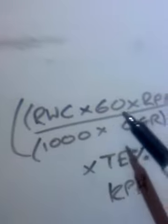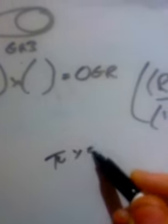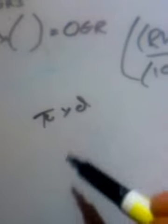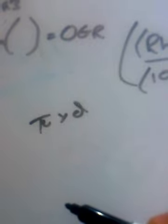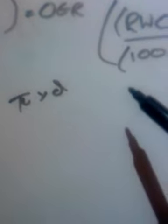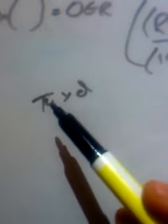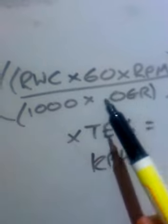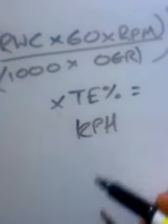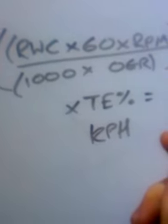Your rear wheel circumference — which I'll cover in another video — is simply pi times diameter. To get that from a tyre size you'll need to calculate it from the tyre dimensions, or if you've measured the tyre diameter directly, just use pi times diameter. Then: pi times diameter, times 60, times the RPM, divided by 1000 times your overall gear ratio, times your transmission efficiency — and there you go, vehicle speed in kilometres per hour.